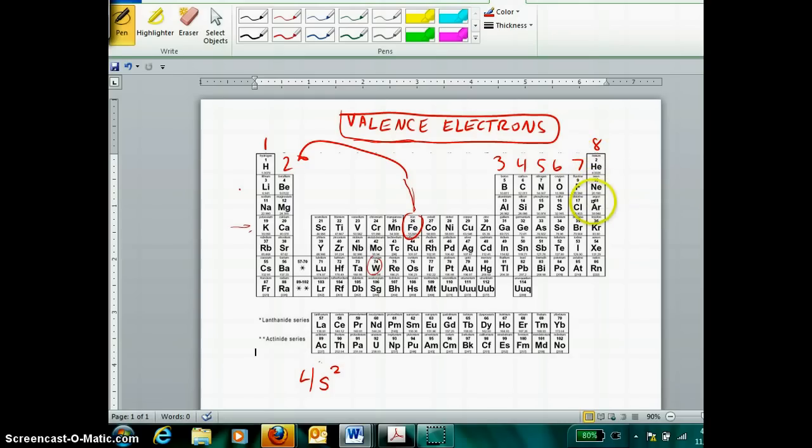And in fact, it does, because if we did the entire configuration, it would have argon's core, followed by 4s2, followed by 3d6. So yes, these are the two valence electrons, and they are 4s electrons.